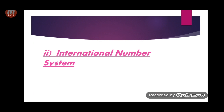I hope you understood the Indian system, which you have also studied in fourth class. Now I will talk about the international system. When I showed you the chart at the beginning, you could see that after ten thousand we have two different names. In the international system we have hundred thousand, then millions, then ten millions, and so on. This is new for you so I will explain it very briefly.